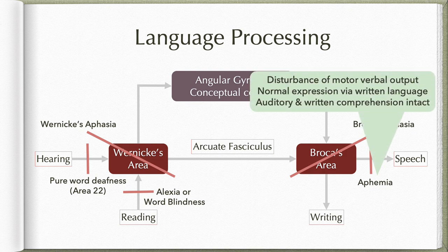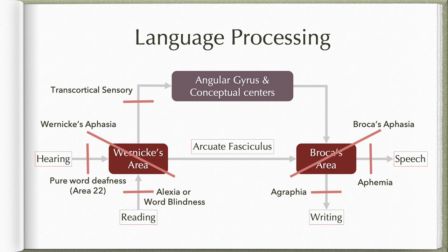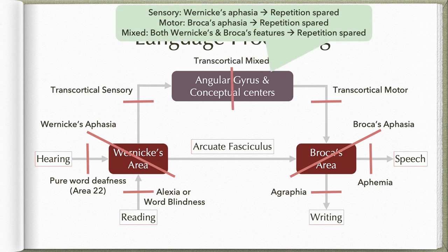Then we have aphemia, where Broca's area is normal but its connection with the motor area is lost — there is disturbance of motor verbal output. Expression via written language is normal and auditory and written comprehension is intact; the patient is just not able to verbalize. An extension of this problem is dysarthria. Similarly, agraphia — the patient can speak normally but is unable to write — results from loss of connection with the supplementary motor area. Then considering the areas connecting Wernicke's with Broca's area: lesion in the pathway connecting Wernicke's to the angular gyrus results in transcortical sensory aphasia; lesion in the pathway from the angular gyrus and conceptual centers to Broca's area gives transcortical motor aphasia; lesion to the angular gyrus and conceptual centers themselves gives transcortical mixed aphasia.